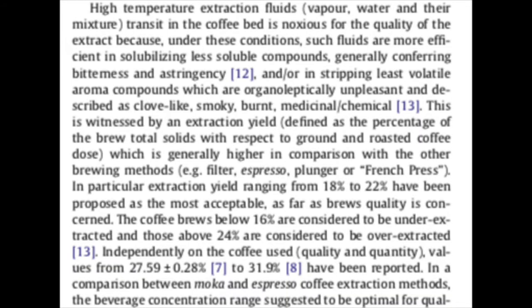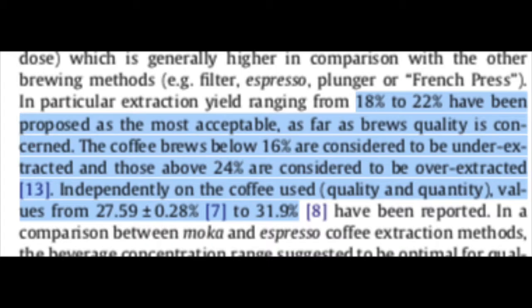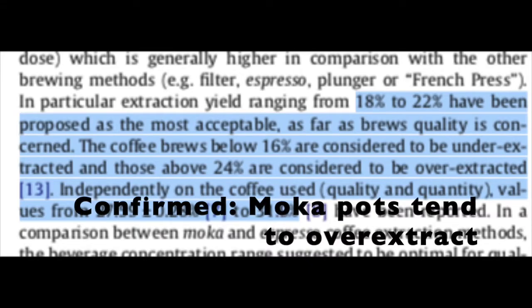They discuss why this happens chemically, using fancy words like organoleptic, and offer evidence in the form of extraction percentages from the literature. While 18 to 22 percent extraction is ideal for coffee, mocha extraction has been measured to be 27 to 32 percent, which confirms the advice in my other videos about most tips for mocha pots being oriented towards preventing over extraction.